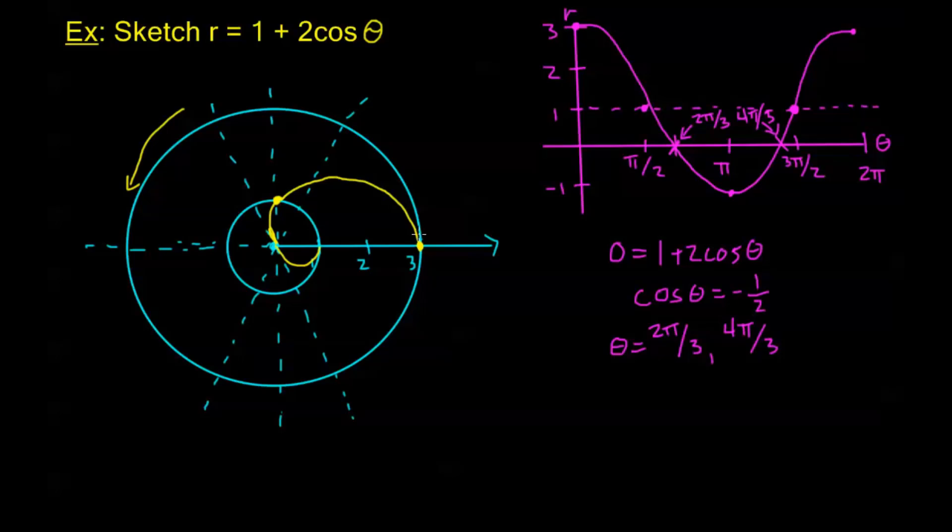Now we can keep drawing using my reference graph but what if instead we use some of our symmetry tests? Notice I'm using cosine and with cosine we always have our first symmetry test. That is if I replace this θ with a negative θ I get the exact same equation because cosine is even so that means I'm symmetric over the polar axis. Whenever we're symmetric over the polar axis as soon as I finish graphing 0 to π I just need to flip everything that I have and draw it again as a reflection over the polar axis and we'll finish out our graph.